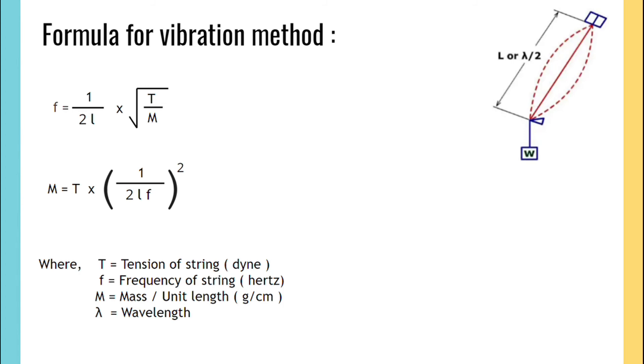and λ is wavelength. Here, 2L is λ, that is wavelength. So the formula becomes M equals to T into (1 by λf) the whole squared.